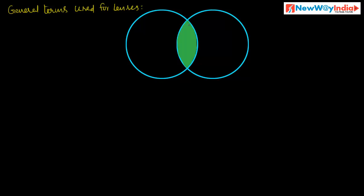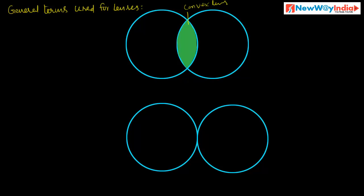This is called a convex lens. In the same way, with one halosphere and another halosphere, this part is called a concave lens.